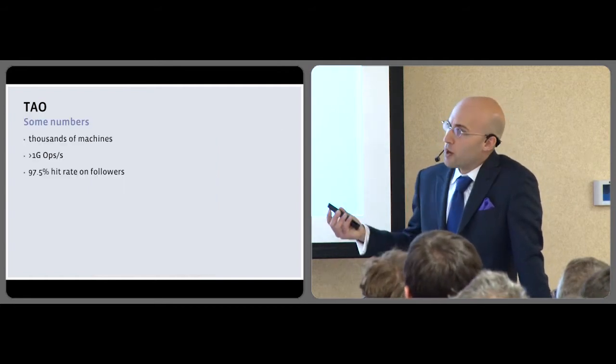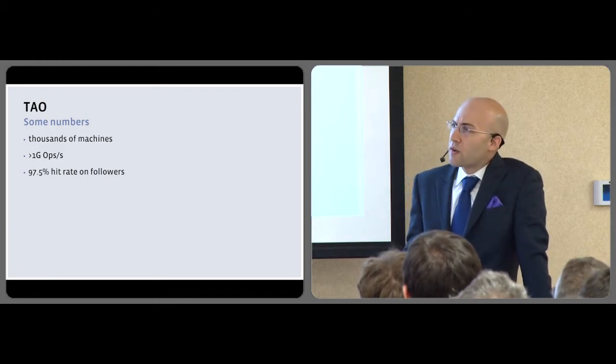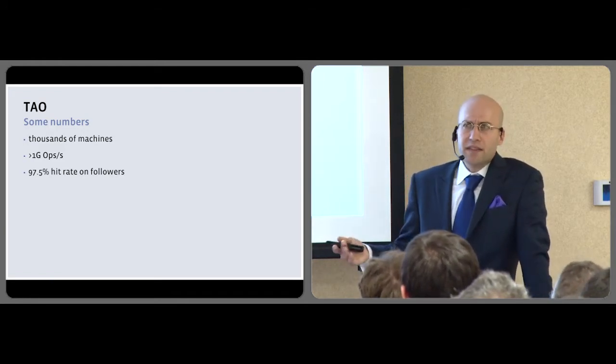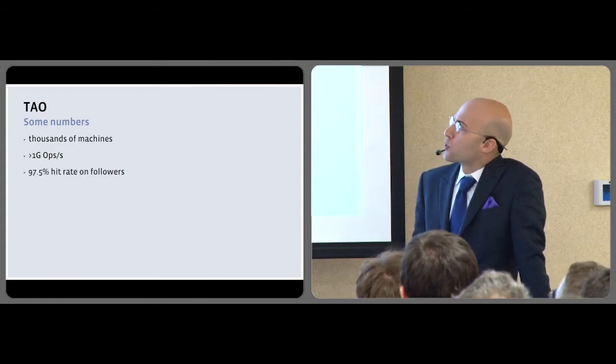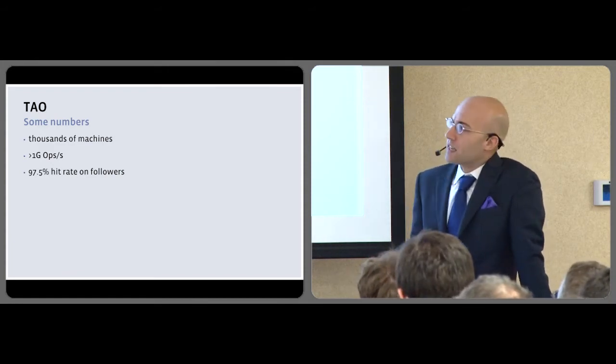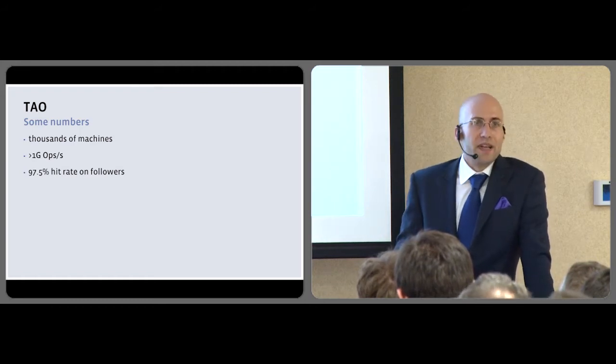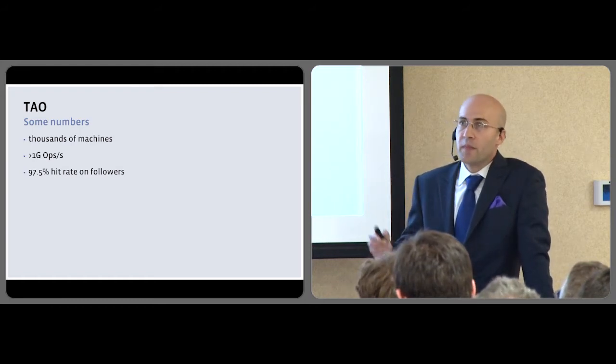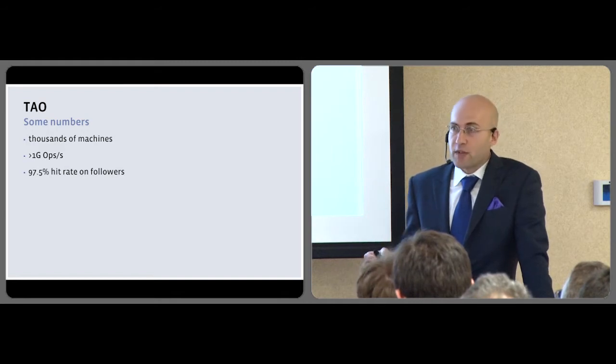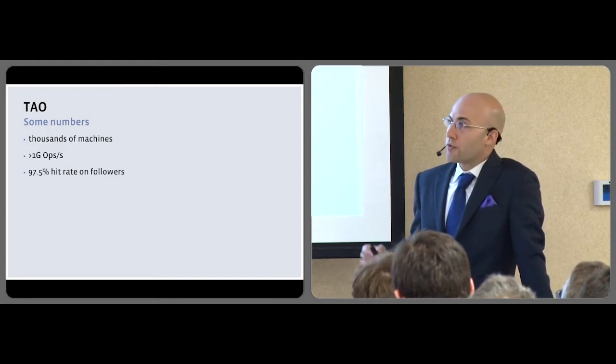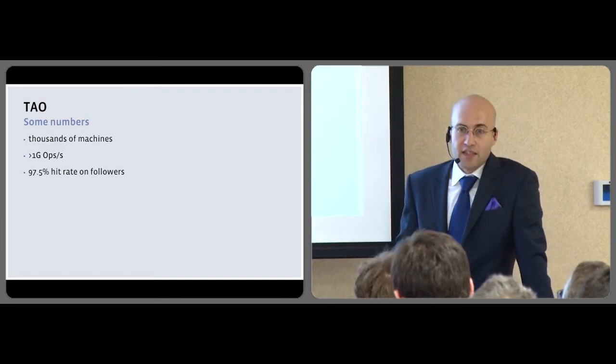In terms of numbers, TAO has a deployment fairly similar to Memcache. It's a bit higher in terms of number, but not significantly. So we're also talking about thousands of machines, over a billion cache operations per second. And here again, the vast majority of the social graph is served straight from memory without accessing the databases.